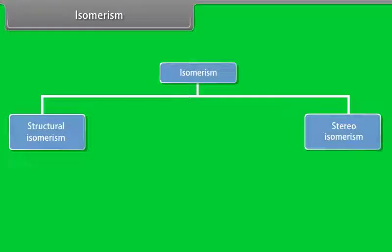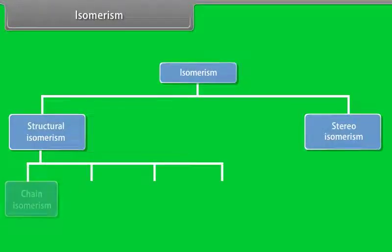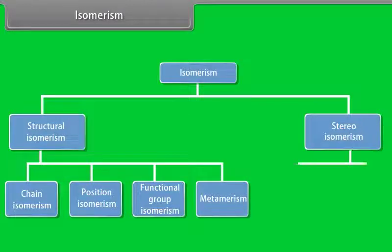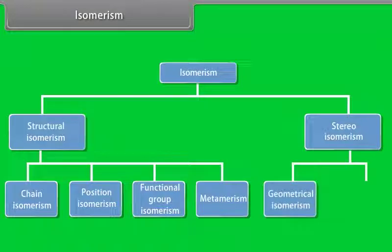Structural isomerism can be subdivided into chain-isomerism, position-isomerism, functional-isomerism, and meta-isomerism. Stereo-isomerism is further categorized into geometrical and optical-isomerism.